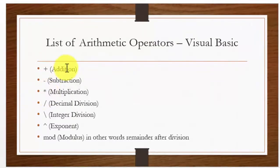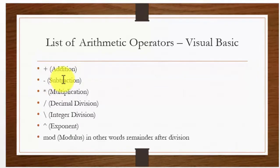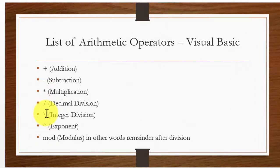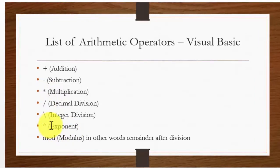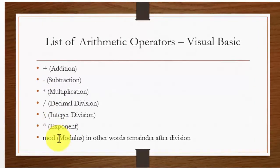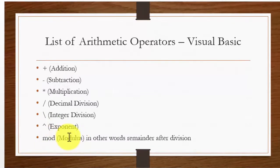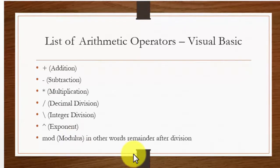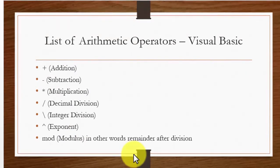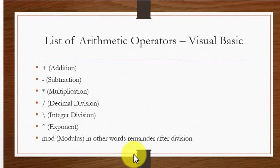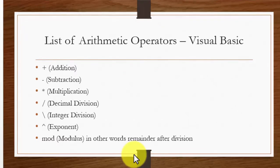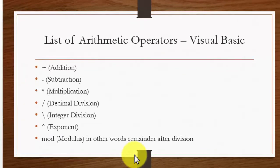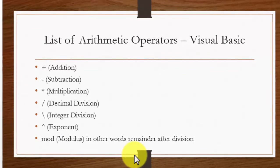We have the addition operator, the subtraction operator, the multiplication operator, but we have two sets of division operators. We have an exponent operator which is used for to the power, and we have a mod operator which is short for modulus which gives you the remainder after division. In the next slides we are going to be looking at each one of these operators in a little bit more detail, and then towards the end we are going to be doing an example using Visual Studio Microsoft Visual Basic console application to see these operators in action.